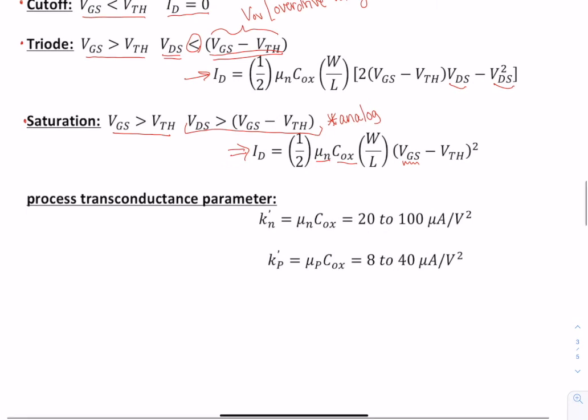We use what's called a process transconductance parameter. A lot of times this will be the value that you're given from a data sheet. And that will be the combined value of mu N COX or mu P COX. And these are some typical values.